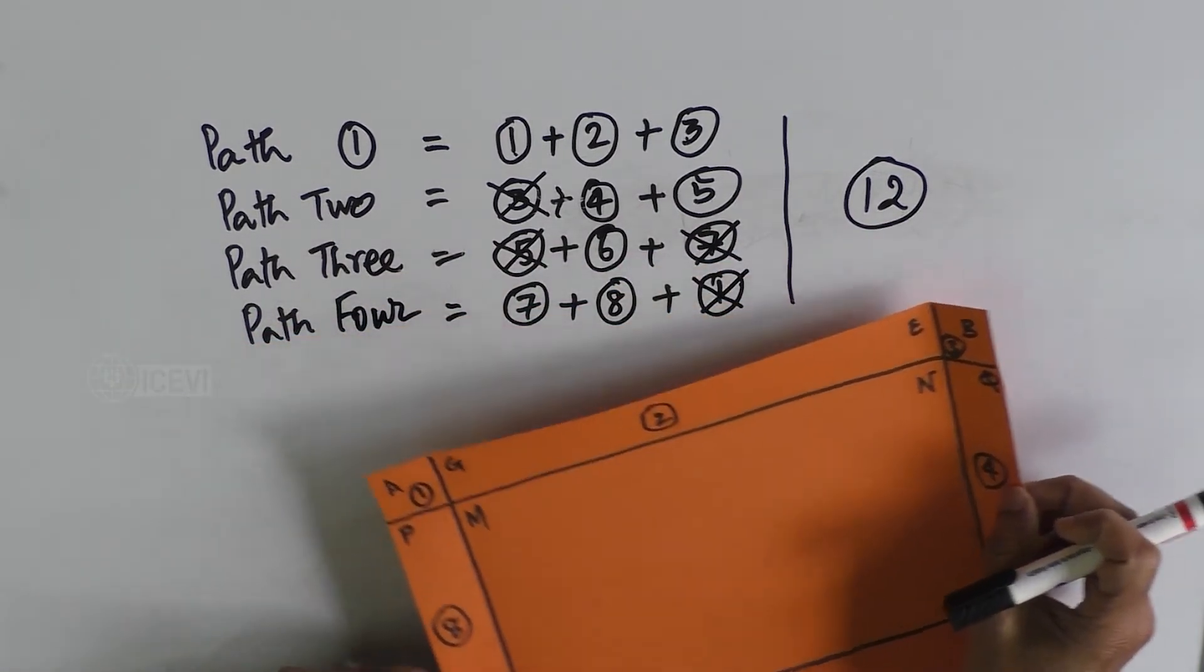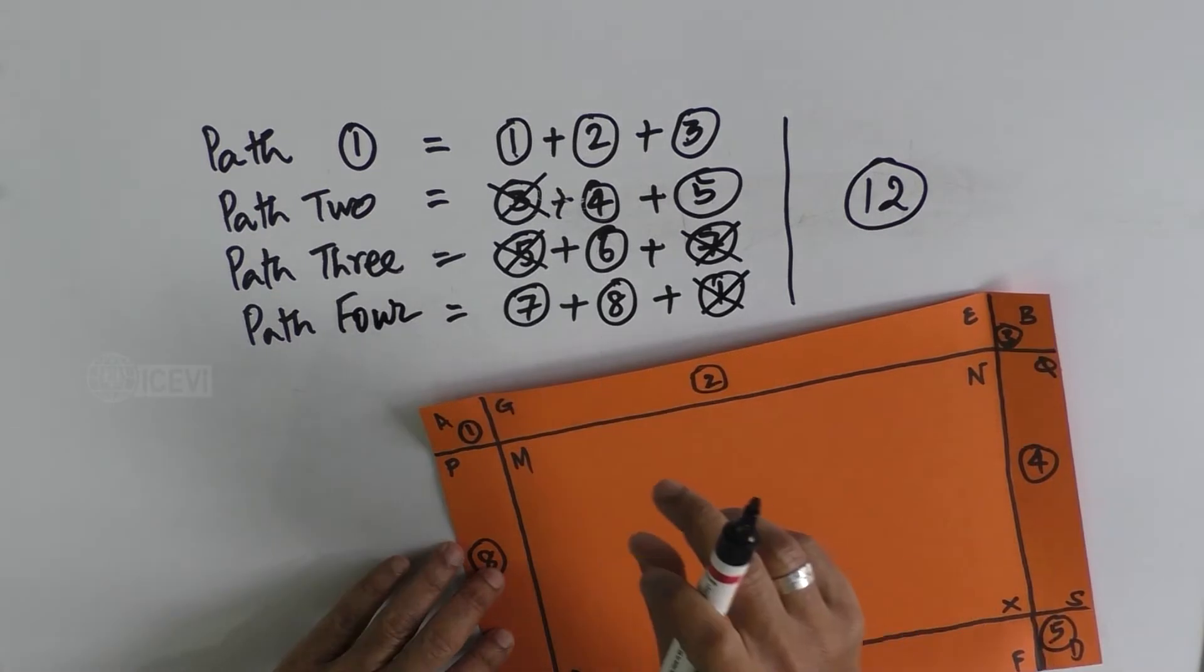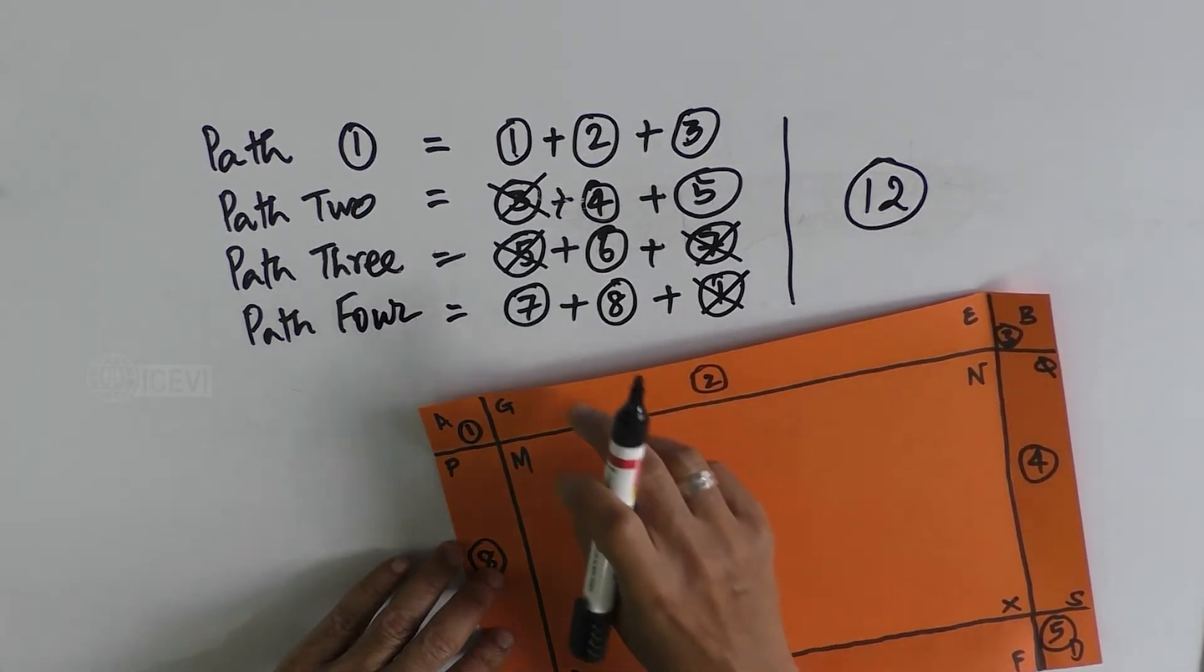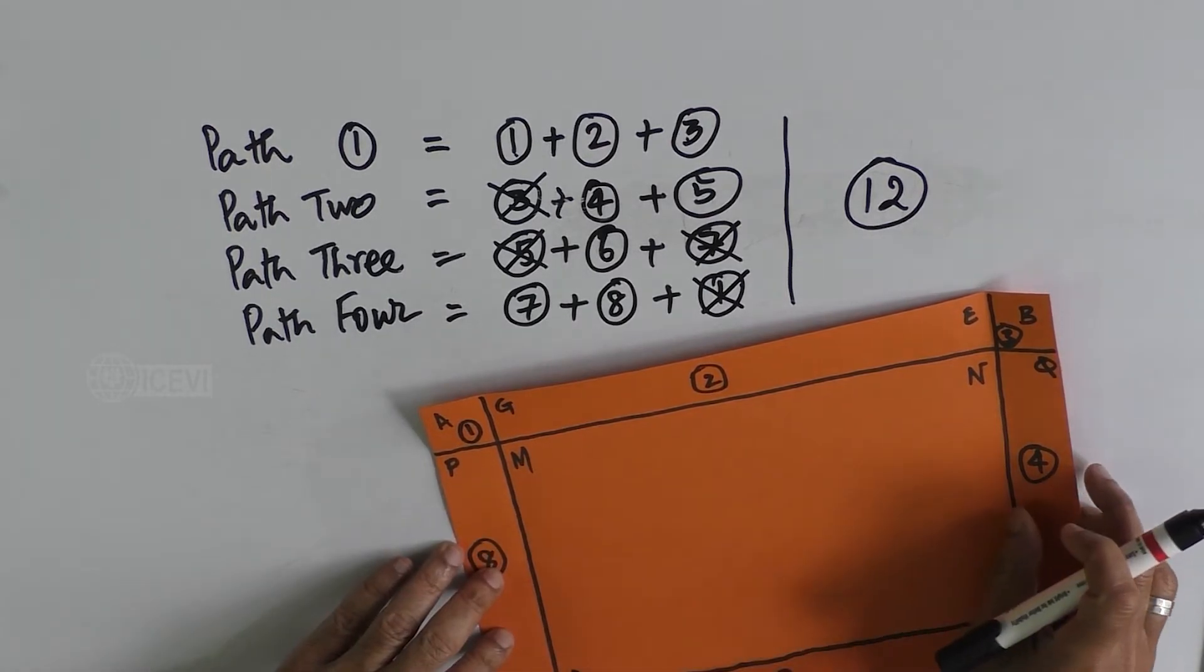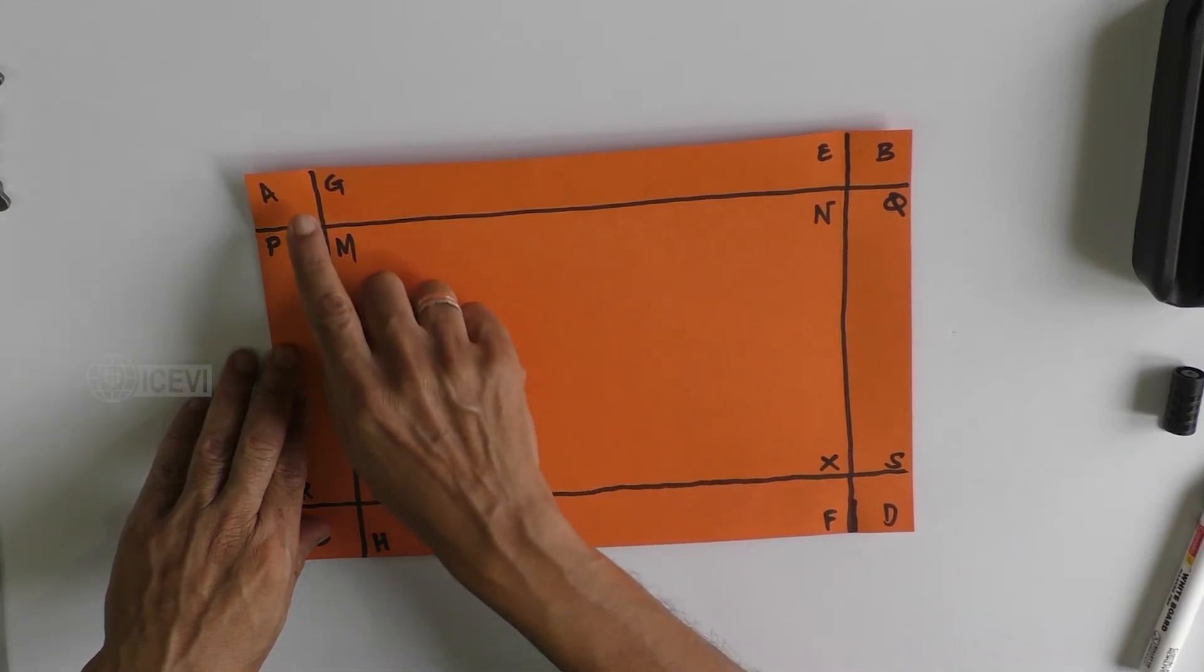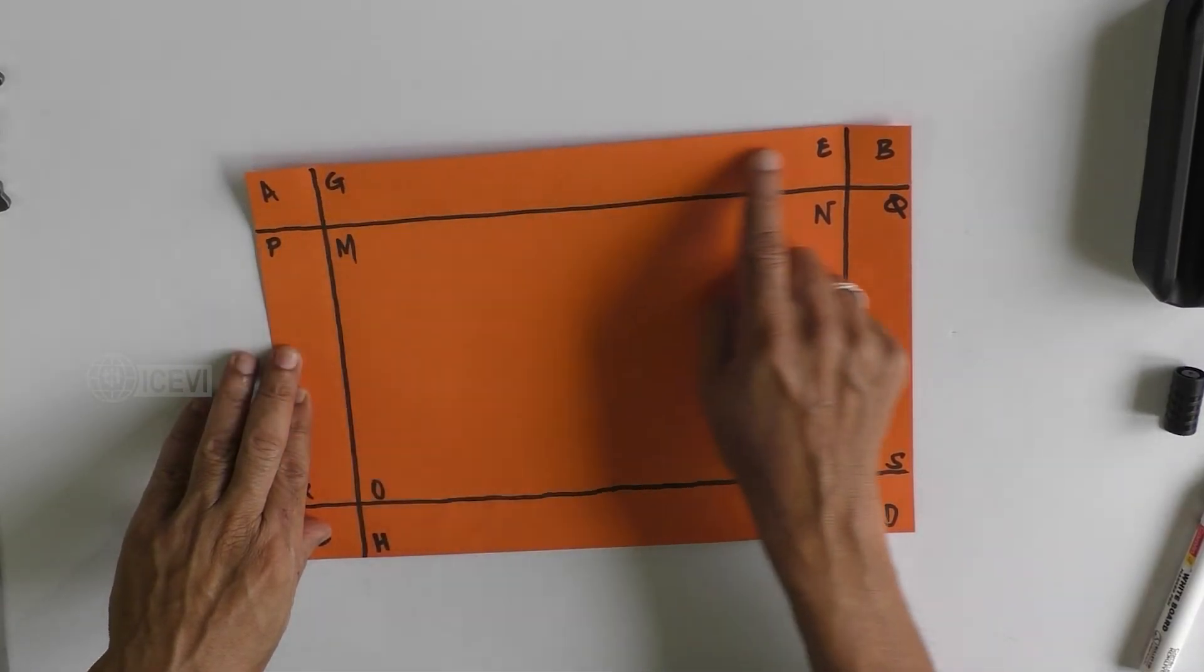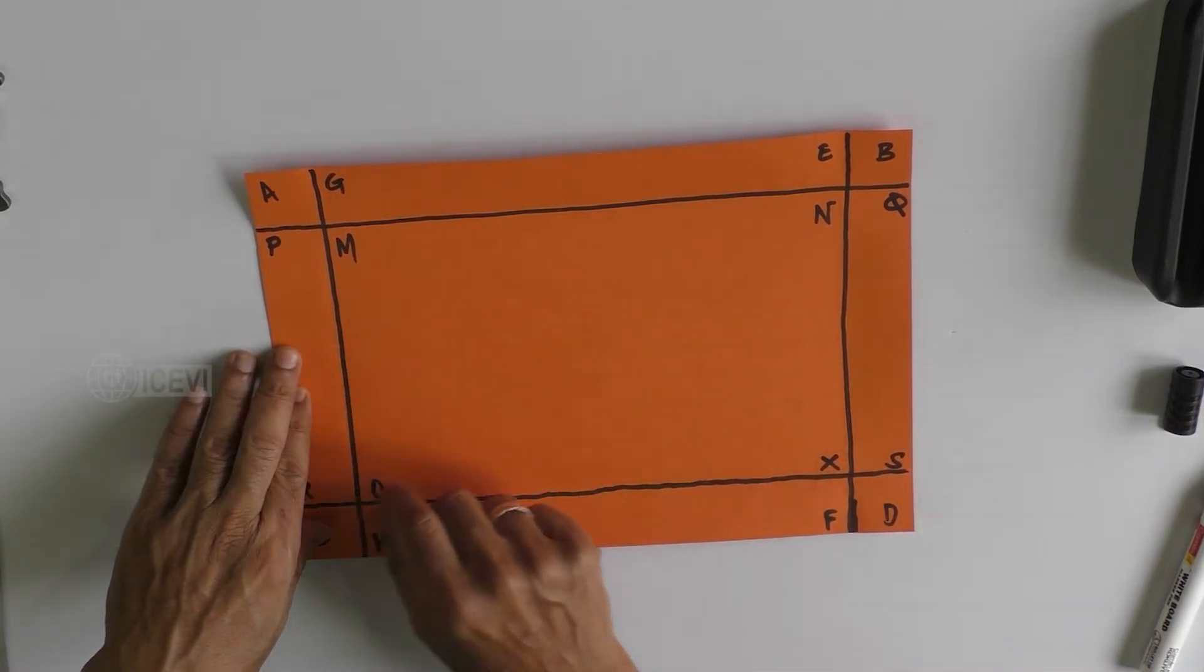That means one, three, five, and seven should appear only one time in the calculation of the rectangular pathway. This is one of the ways of calculating the total area of the rectangular pathway.